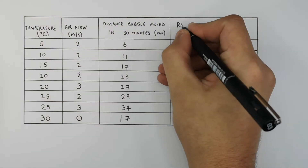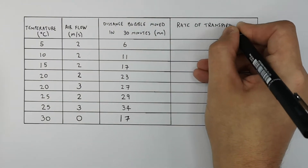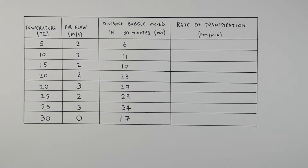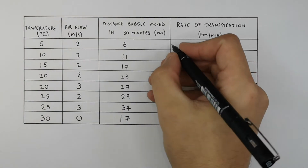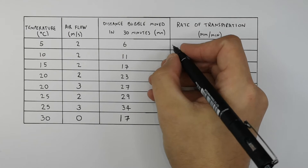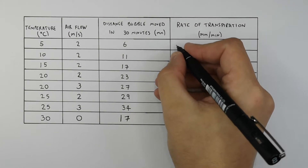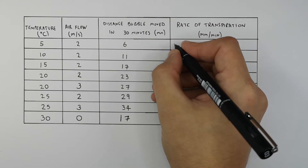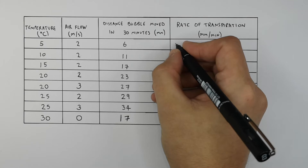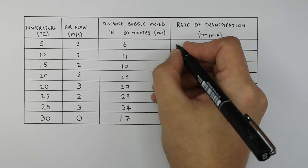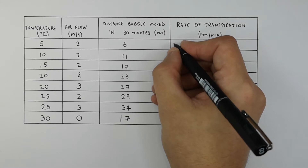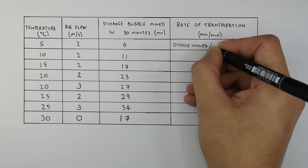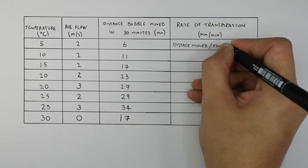To work out the rate of transpiration in millimeters per minute — that is, how quickly the bubble moves through the capillary tube — we divide the distance traveled by the bubble by the time.